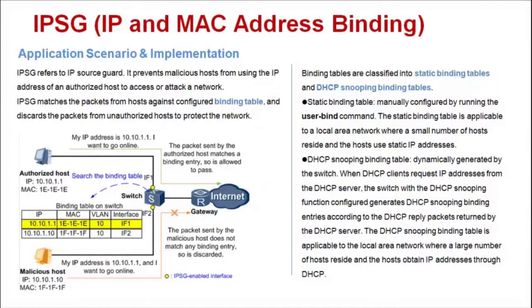Today, I will introduce to you the IPSG function. IPSG refers to IP Source Guard. It prevents malicious hosts from using the IP address of an authorized host to access or attack a network. IPSG matches the packets from hosts against a configured binding table and discards the packets from unauthorized hosts to protect the network.